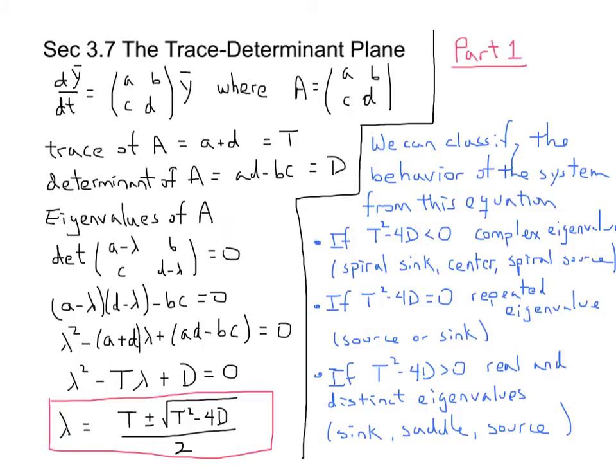The eigenvalues of A are found from our characteristic equation, which we've done many times. We take the determinant of this matrix, set it equal to zero, and we have our characteristic polynomial. When we write it in terms of A, B, C, and D, we identify that the coefficient of the lambda term is nothing more than what we call the trace, and the constant term is the determinant. So our characteristic polynomial for our eigenvalues is λ²-Tλ+D.